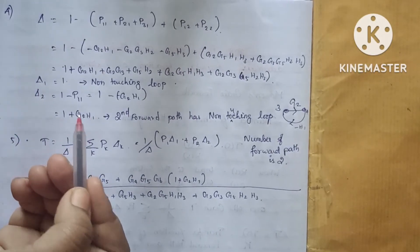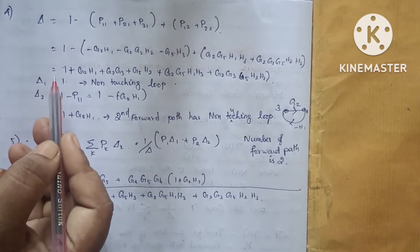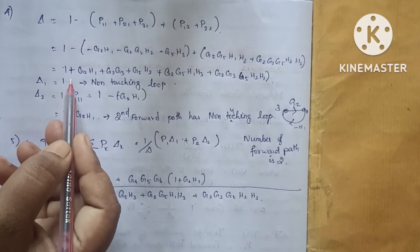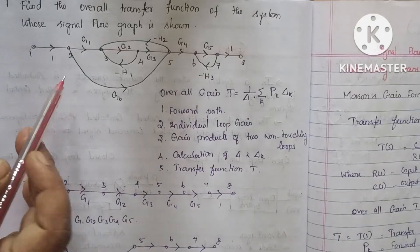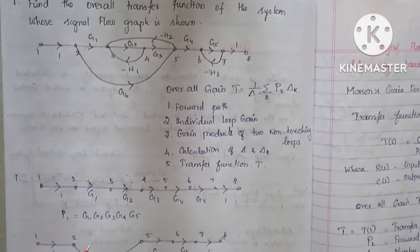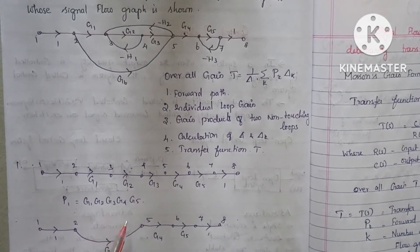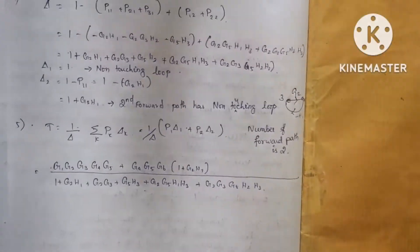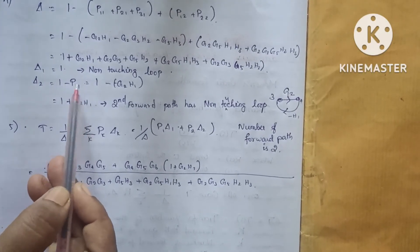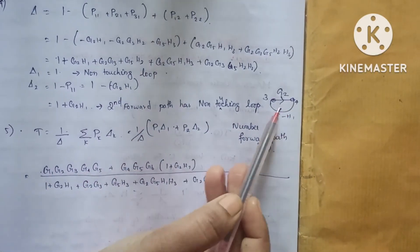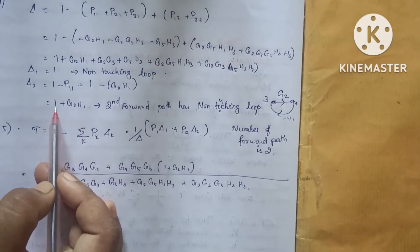Delta-1 corresponds to the first forward path and delta-2 to the second forward path. For delta-1, we find the loops non-touching with the first forward path. Delta-1 equals 1 minus minus G2 times H1, which gives 1 plus G2·H1.